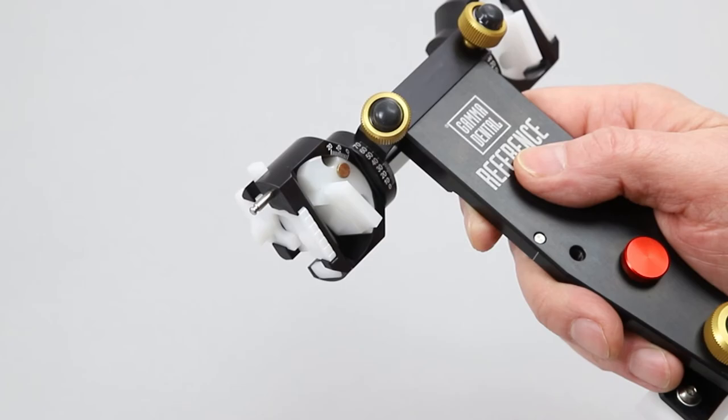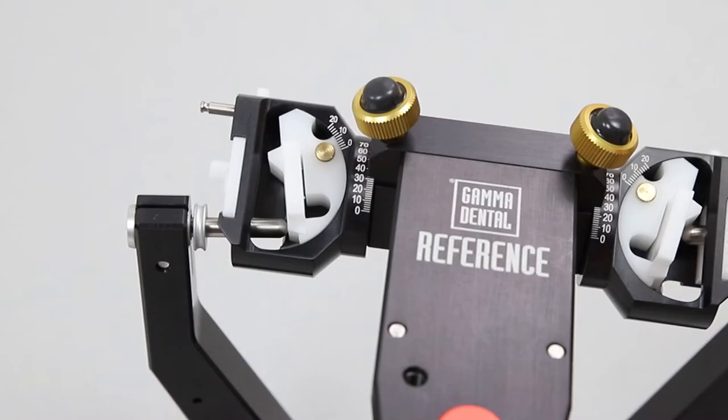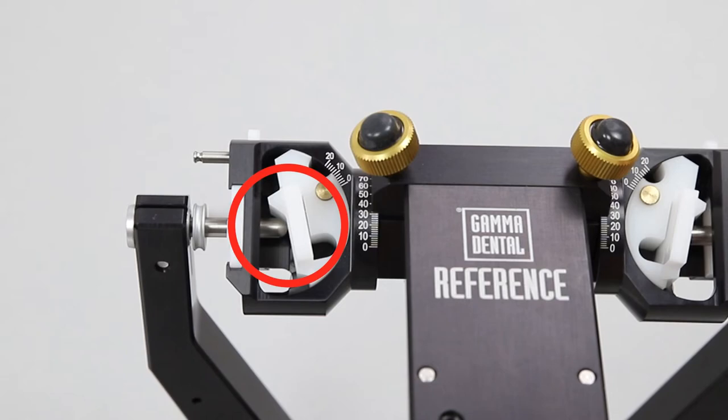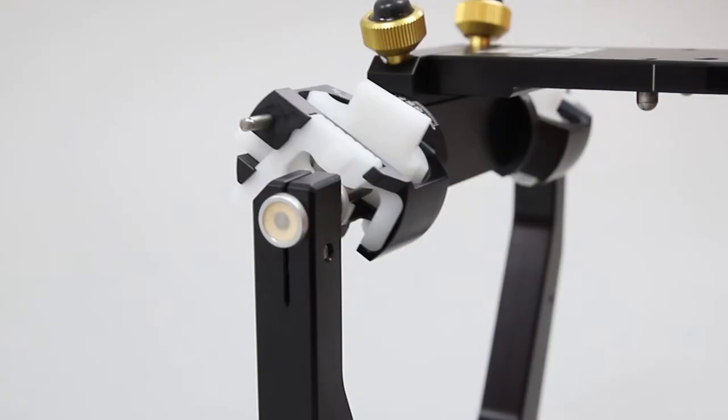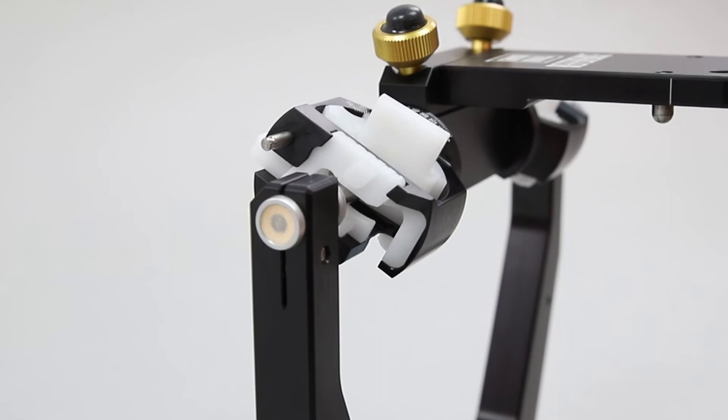This axis connects to the upper member by sagittal and transversal guide elements. Posteriorly, the movement capacity of the articulator axis is limited to the centric position. Anteriorly, the axis can move according to the characteristics and inclinations of the sagittal and transversal guide elements.